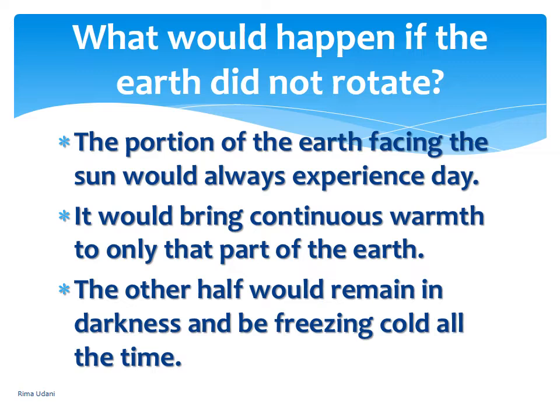What would happen if the earth did not rotate at all? The portion of the earth facing the sun would always experience day — there would be no darkness, only sunlight, bringing continuous warmth to only that part. The other part of the earth would remain in darkness and be freezing cold all the time. We really don't want that to happen!